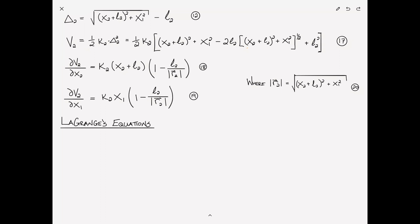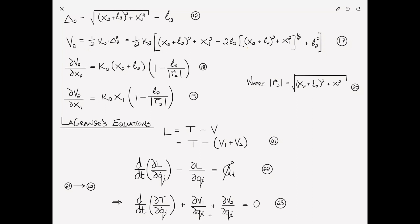So now we can go ahead and substitute into Lagrange's equations. We begin by defining the Lagrangian L as T minus V, where in this case V is a combination of v1 plus v2. Lagrange's equations state that the time derivative of partial L partial q dot sub i minus partial L partial q is equal to capital Q sub i, which in this case is 0 because there are no external forces. We'll label these equation 21 and 22, and then when I substitute 21 into 22, we can write Lagrange's equations in the form the time derivative of partial T partial q dot i plus partial v1 partial q i plus partial v2 partial q i is equal to 0. We'll call this equation 23.